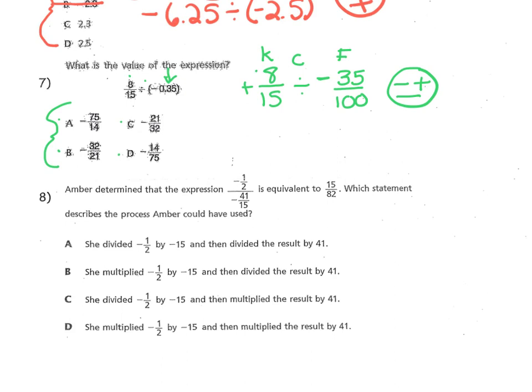8 ABC 15th divided by negative 35 ABC 100. You should get the answer negative 1 and 11/21sts on your calculator. But as you look at this, you say, none of these reflect that answer.